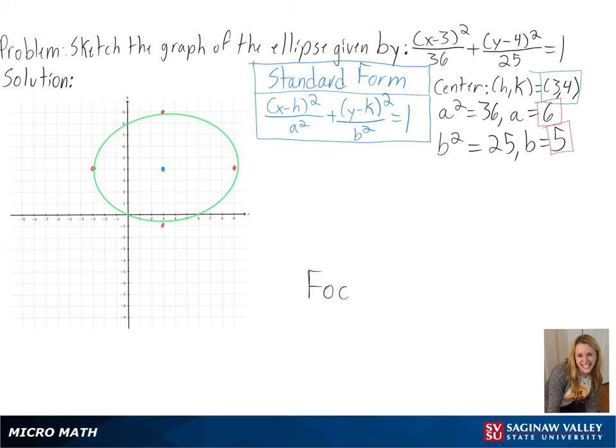If needed, we could also find the foci of our ellipse by finding c, or the square root of a² minus b². This will be plotted on our longest axis, in this case our x-axis, on either side of our center. By plugging in our values, we get the square root of 11 or around 3.32 on either side of our center.